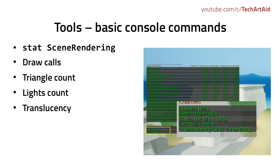There's also a command called statSceneRendering that shows you draw calls, the triangle count in the entire scene — the only command that provides you with this information — the amount of dynamic lights in the scene, and, which is very interesting, the cost of translucency in your scene.